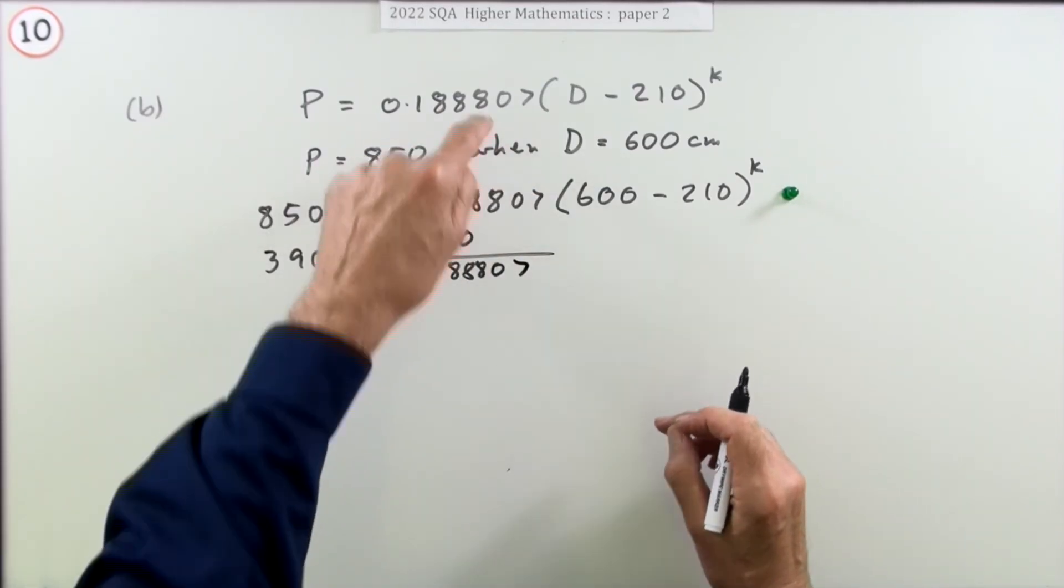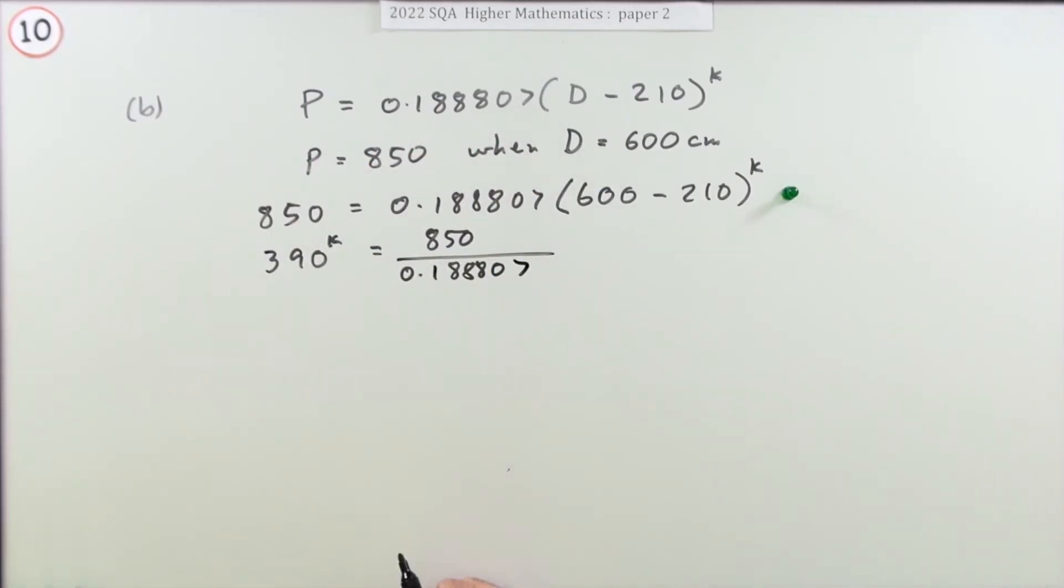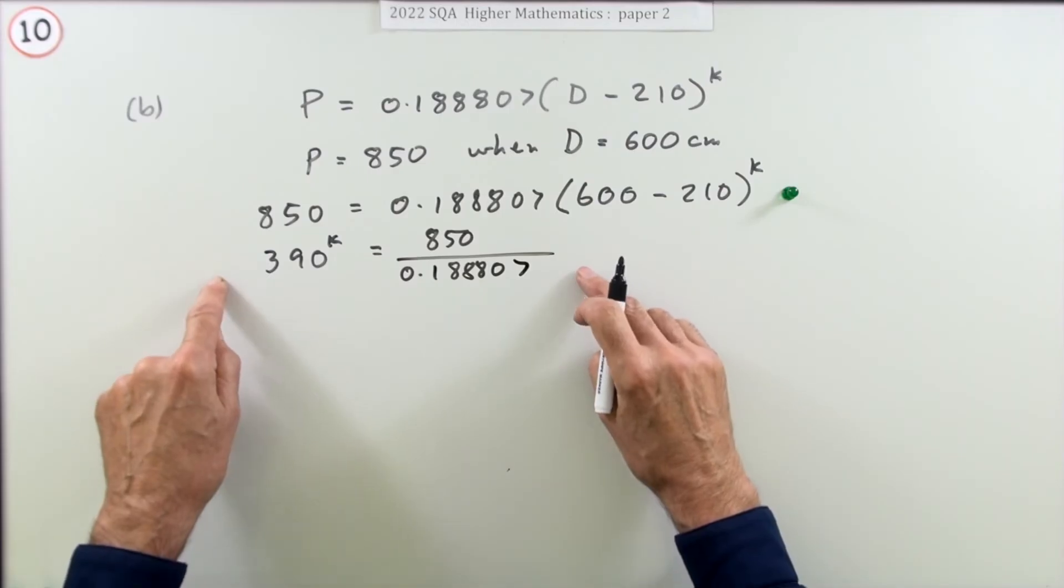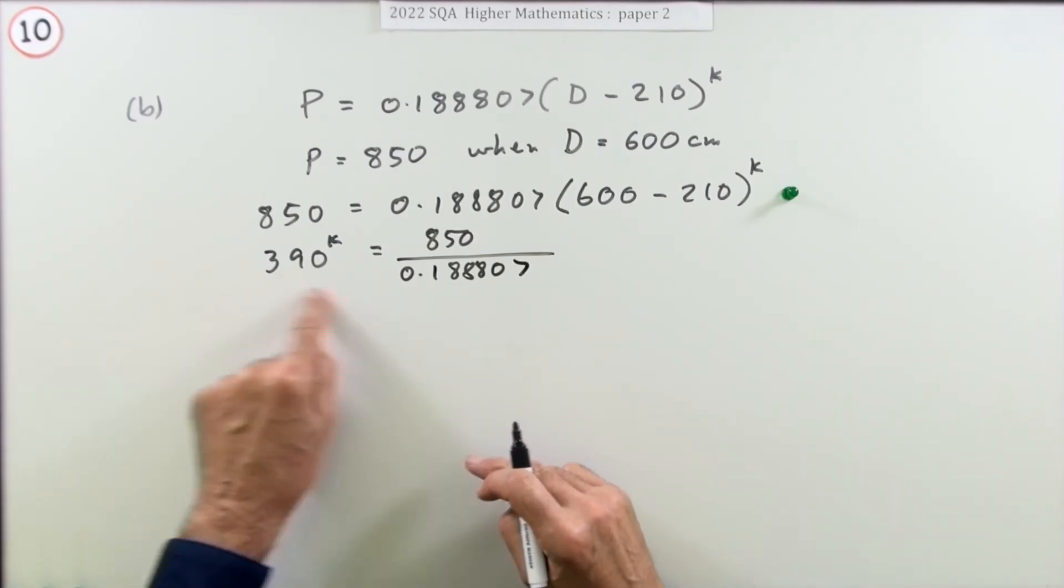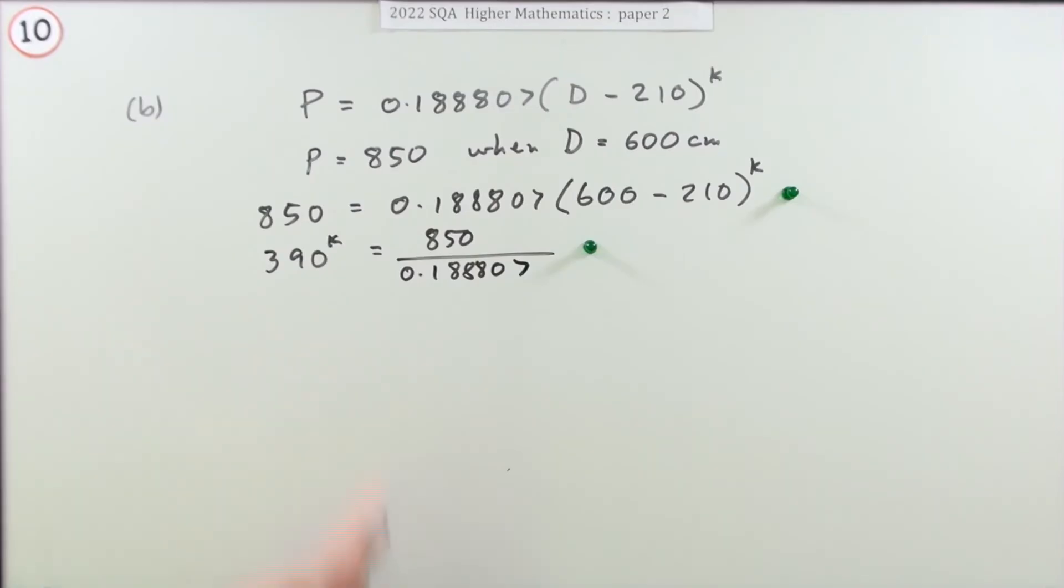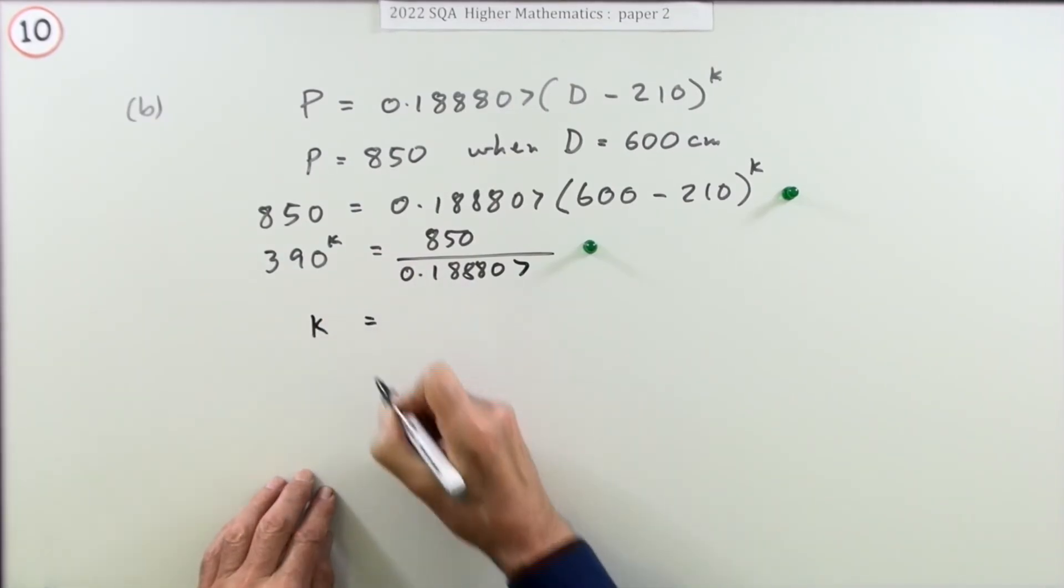The second mark is for rearranging it into this part here, just isolating that exponential term. Now, how would you solve that? Logarithms.